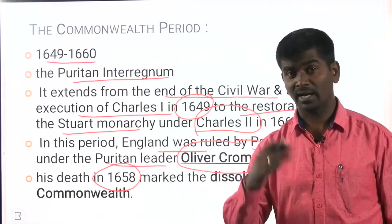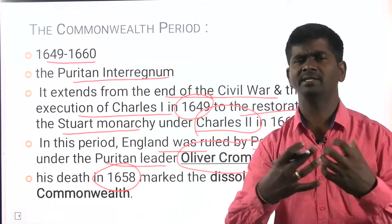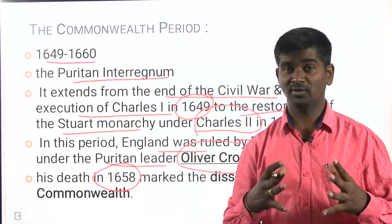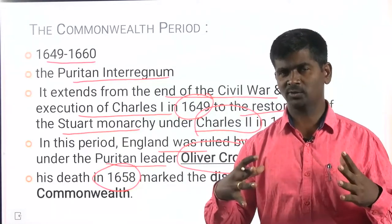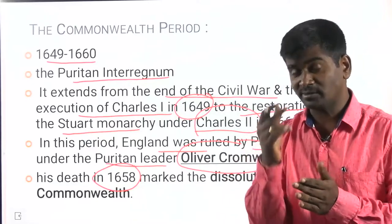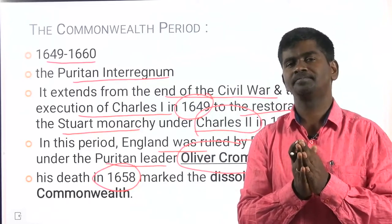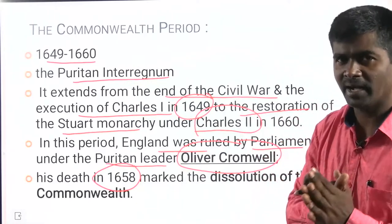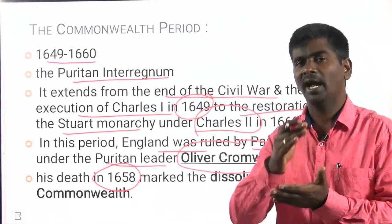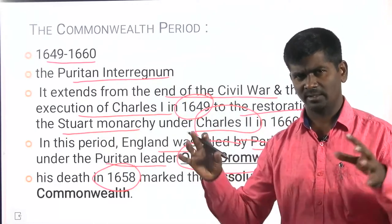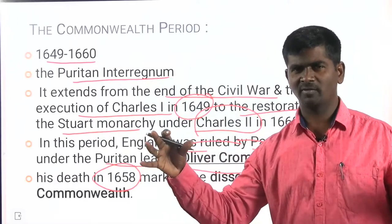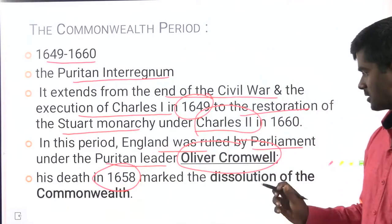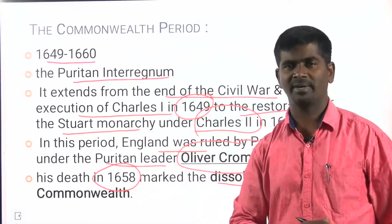After 1658, nobody was ready to take over the responsibility of the Parliament. Hence, the intellectuals, philosophers, educationists, and socialists of the UK had to request the son of Charles I — Charles II — to come forward and take the throne. He comes back and takes the throne in 1660. His death in 1658 marked the dissolution of the Commonwealth and the Parliament.